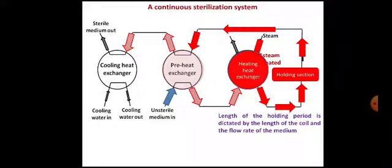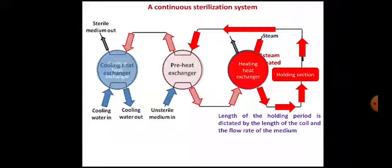After partial cooling, the sterile medium leaves and finally enters the cooling heat exchanger, which is in contact with cooling water, providing instant cooling and immediately dropping the temperature. So for cooling after sterilization there are two steps: the preheat exchanger and the cooling heat exchanger. This is the working of the indirect heat exchanger continuous sterilization system.